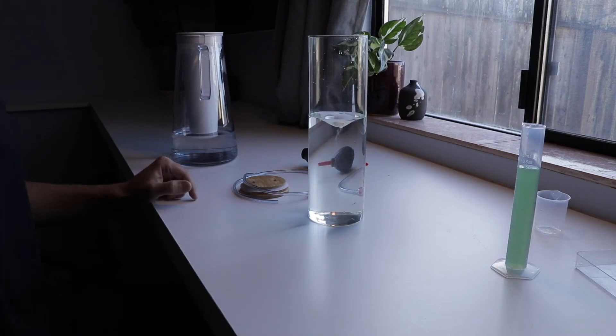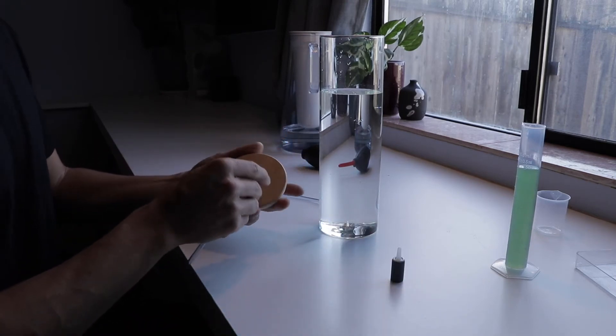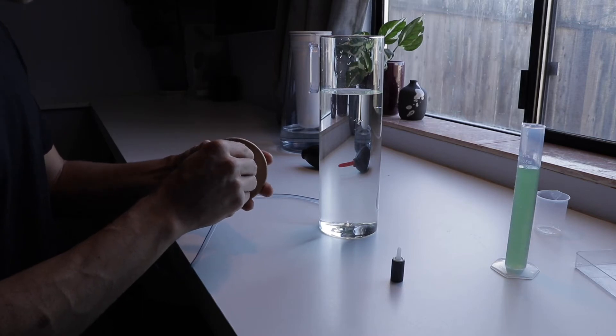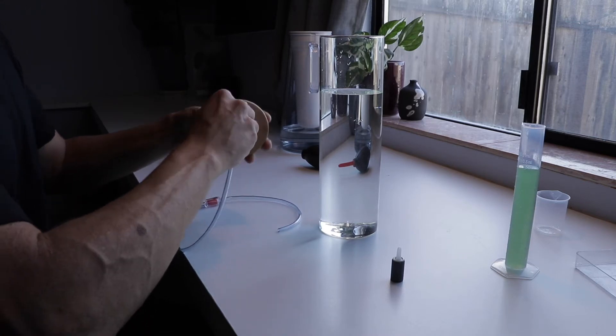Next, swirl the water around so all the salts and nutrients are dissolved in the solution. Then add enough distilled water so there's about three inches of space at the top of your container. That's about 1050 milliliters of solution.